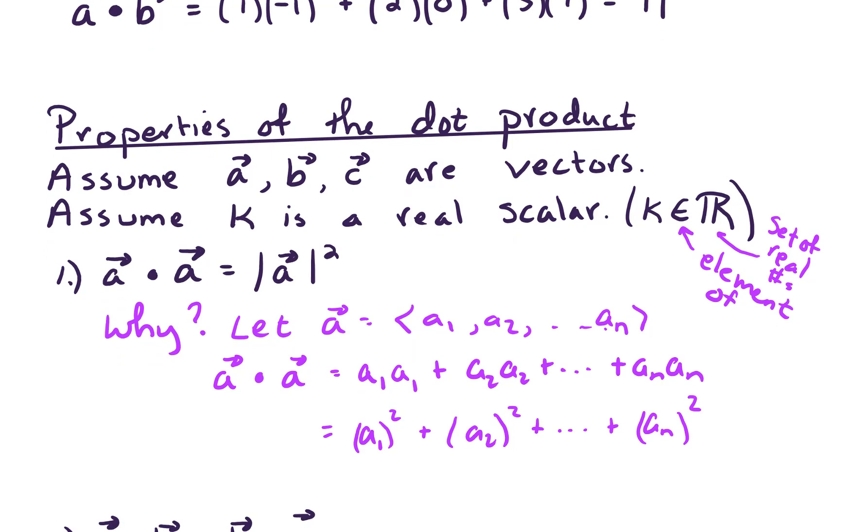Okay, this looks like the sum a1 squared plus a sub 2 squared, all the way up through a sub n squared. Okay, if we square root that and square that, that is exactly what the magnitude of a all squared works out to be.